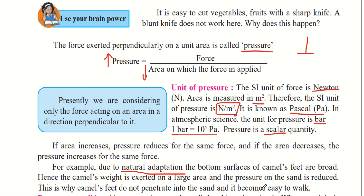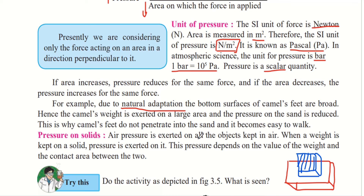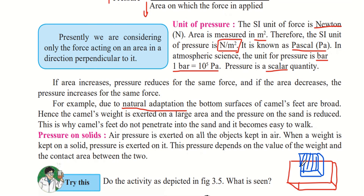Pressure on solids: Air pressure is exerted on all objects kept in air, so no matter where we are, we always have air pressure exerted on everything in Earth's atmosphere. When a weight is kept on a solid, pressure is exerted on it. For example, if we place a blue cube on top of a red box, the weight of the cube exerts pressure on the box. This pressure depends on the weight of the cube and the contact area between the two objects.